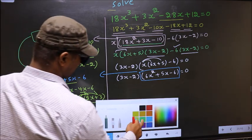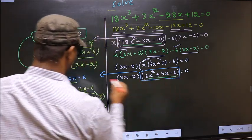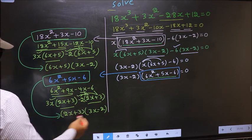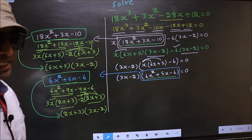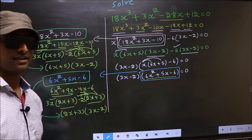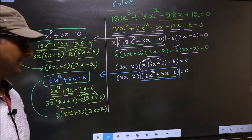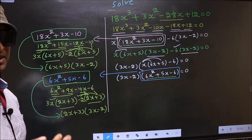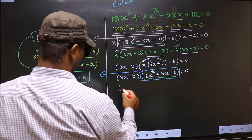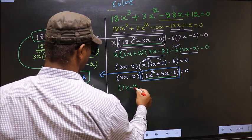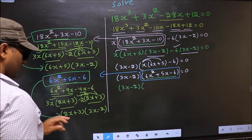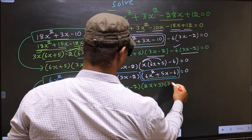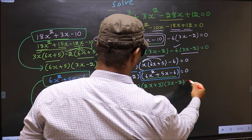In place of this quadratic, we write (2x + 3)(3x - 2). So the full equation changes to (3x - 2)(2x + 3)(3x - 2) = 0.